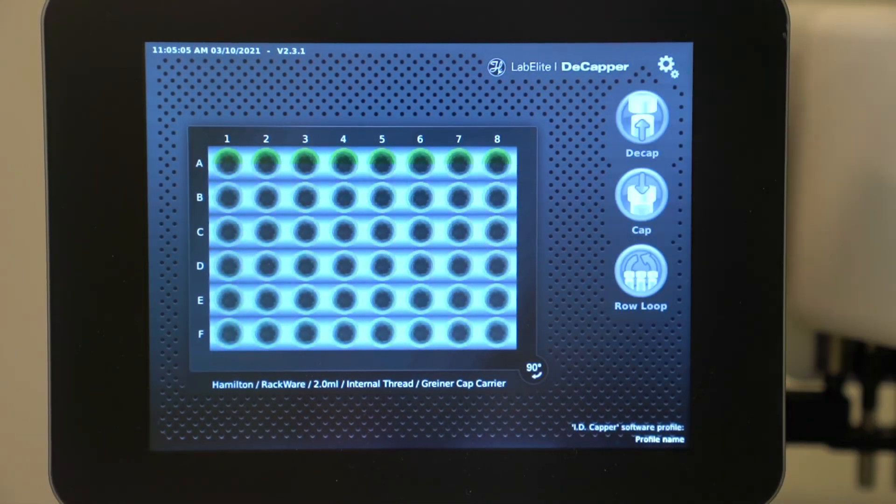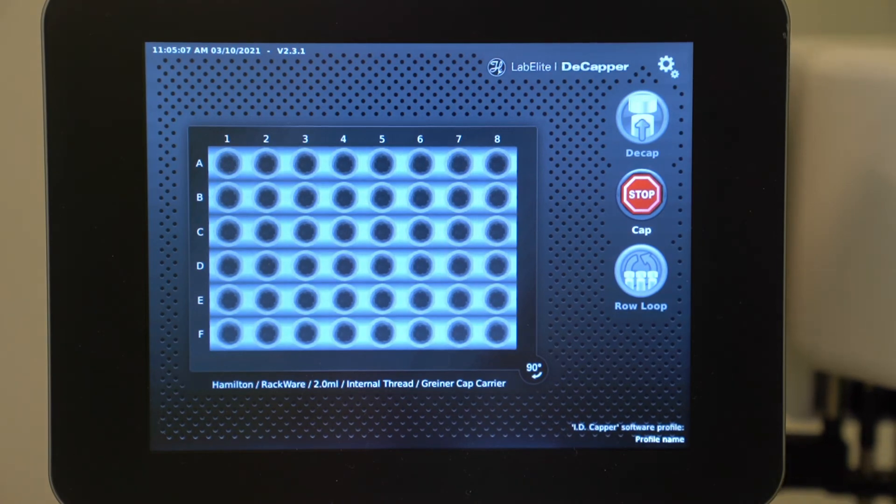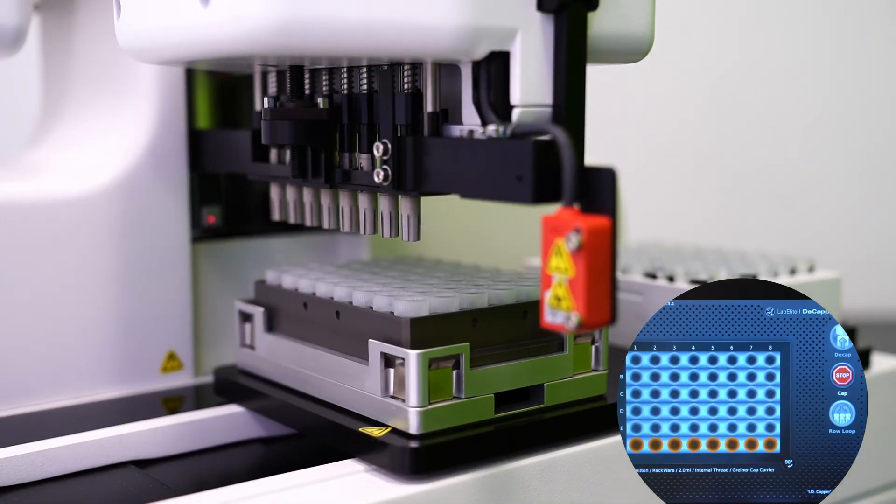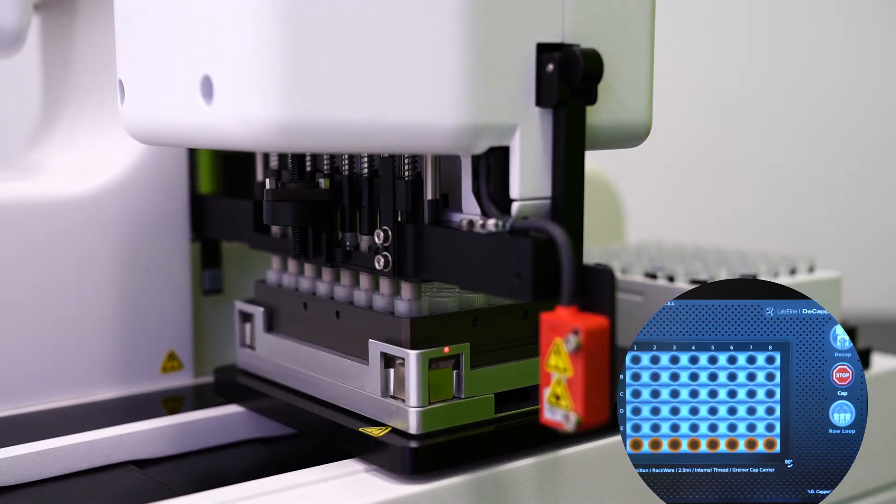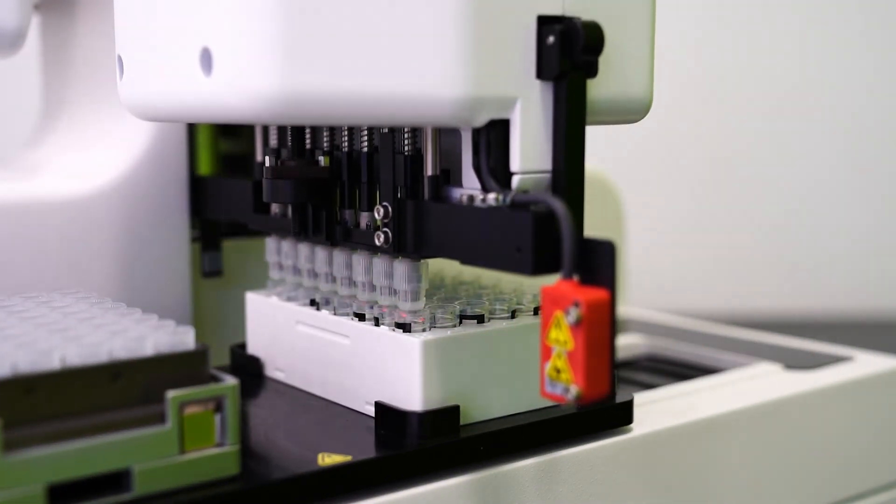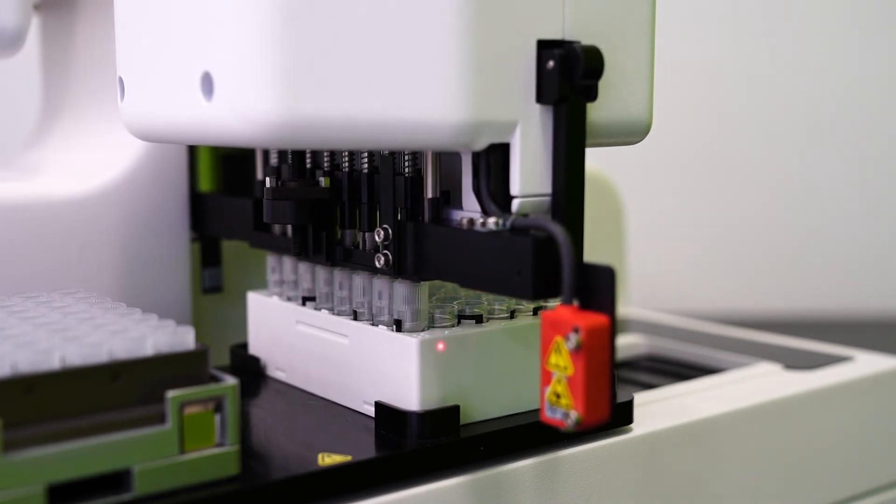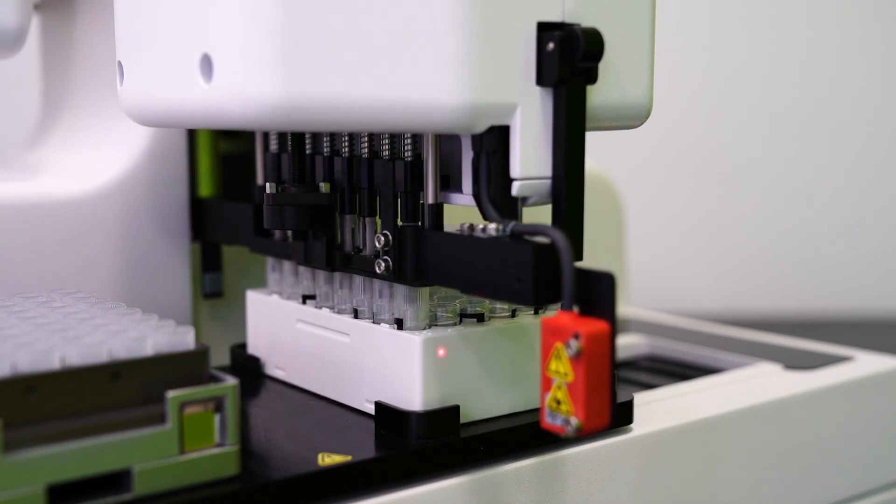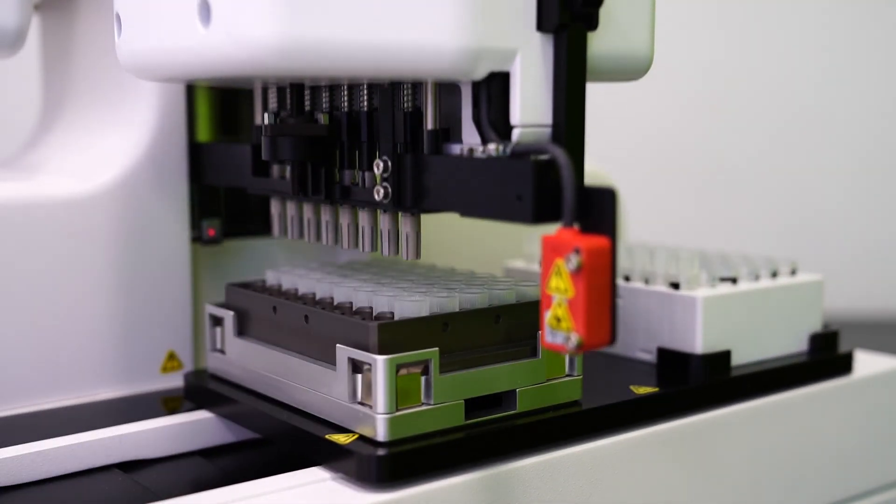Now we're going to hit cap. While this is running, let's talk briefly about secure mode. Secure mode is another useful security feature to aid in error prevention. As you can see, the system caps the tubes clockwise then rotates one quarter turn counterclockwise before re-securing the cap. It does this to ensure proper torque for all caps.